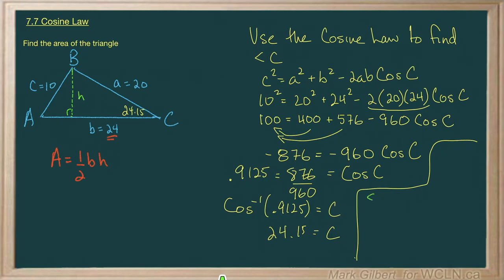We have sine of 24.15 equals the height over the hypotenuse, which is 20. So the height equals 20 times sine of 24.15, which equals 8.18. So there's my height, 8.18.